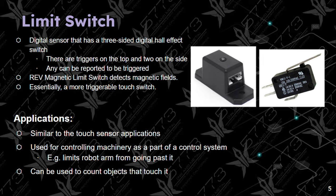The next sensor is the limit switch, which is similar to a touch sensor. It is a digital sensor that has a three-sided digital hall effect switch, with triggers on the top and two on the sides. Any can be reported as triggered. The REV magnetic limit switch detects magnetic fields, making it essentially a more triggerable touch switch that is more sensitive.